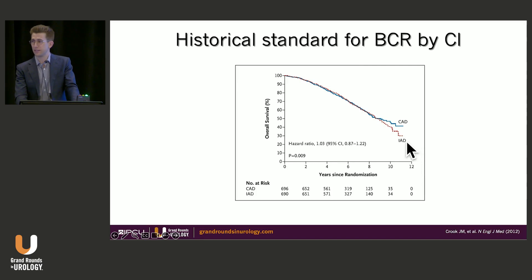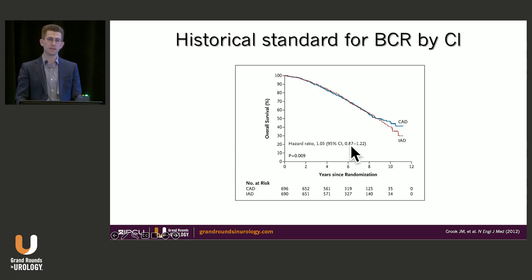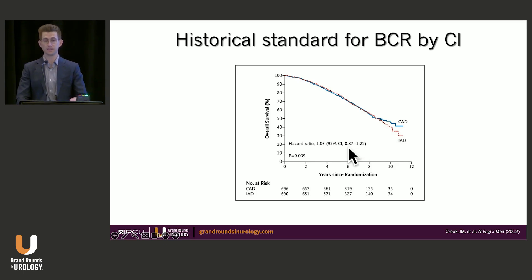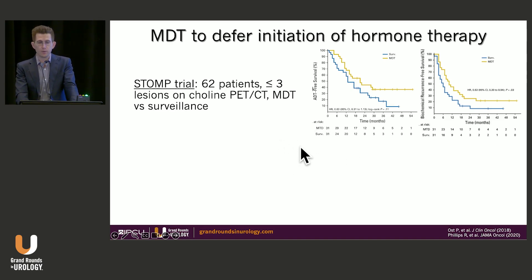What's the historical standard here? If we consider this biochemical recurrence, the historical standard is intermittent ADT. A study from Canada in 2012 looked at intermittent versus continuous ADT for biochemical recurrence and showed that it was non-inferior. Patients lived a very long time and oftentimes did not die of prostate cancer. There's an alternative option being done more and more, which is metastasis-directed therapy to ultimately defer the initiation of hormone therapy.